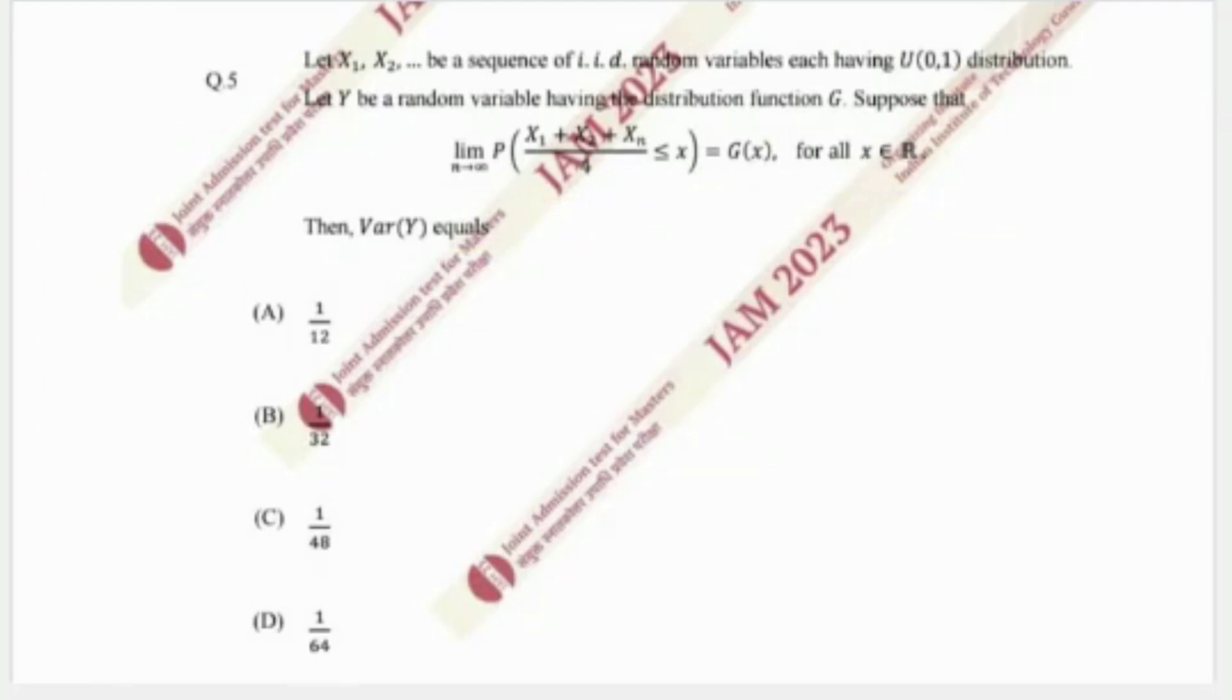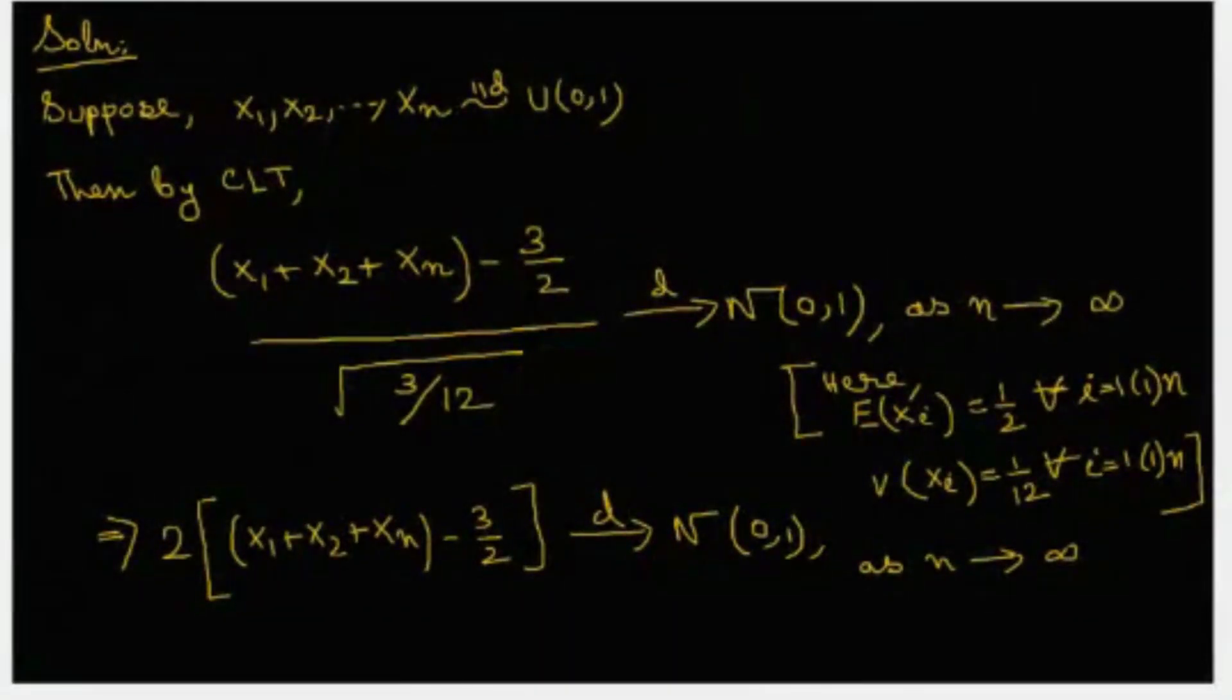Now let us proceed with the solution part. Suppose x1, x2, xn are uniform 0,1 random variables.